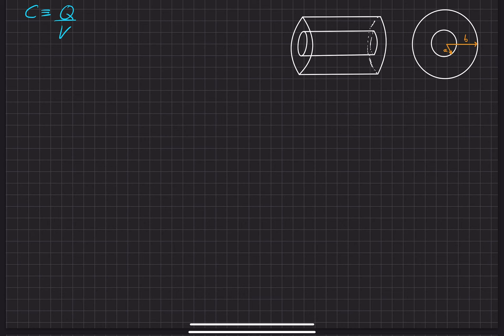It doesn't exactly say in the problem, but we're going to smear a charge Q on the cylinder resulting in a negative charge Q here, and then we'll find out what the capacitance is between those two.